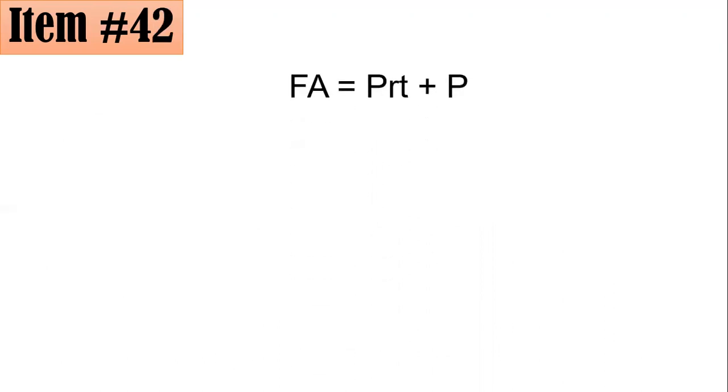We have to remember that the formula for the final amount is equal to the interest, which is PRT plus P. You could see in the right-hand side that you could factor out the P. So you have P times the quantity RT plus 1. And if you would like to determine the principal amount, you have to divide both sides by RT plus 1. Hence, the principal amount is equal to the final amount divided by RT plus 1.